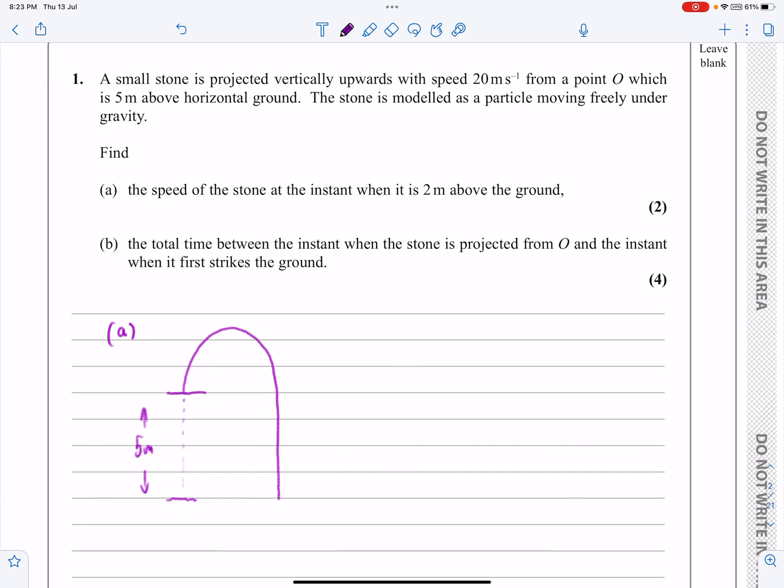At the point where it's thrown, U is equal to 20. We obviously know that acceleration is going to be minus g, and we want the speed of the stone at the instant when it is 2 metres above the ground.